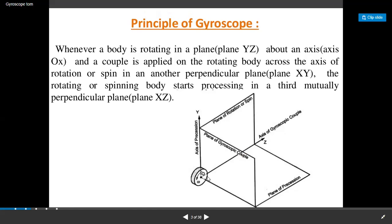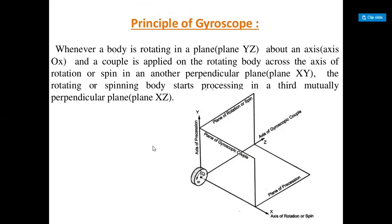The spin of the rotating body is in another plane which is perpendicular to the body. Three axes are given in this diagram: the axis of rotation or axis of spin, the axis of gyroscopic couple, and the axis of precession. All planes are taken as perpendicular to the axis. If the axis of rotation is X, the plane of rotation is perpendicular to X. Similarly, the plane of precession and plane of gyroscopic couple are perpendicular to their respective axes.